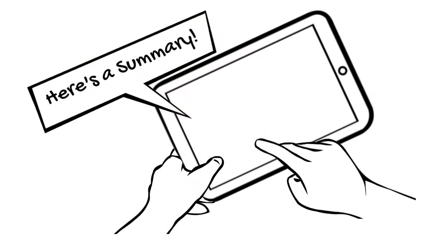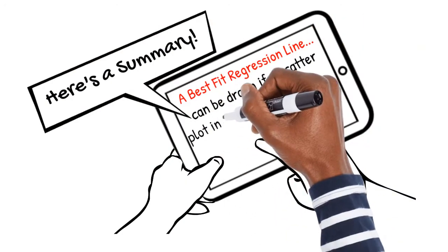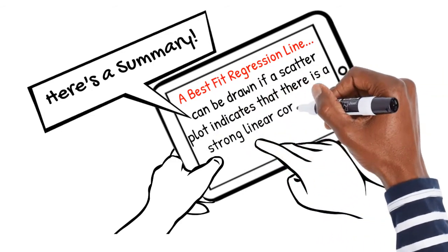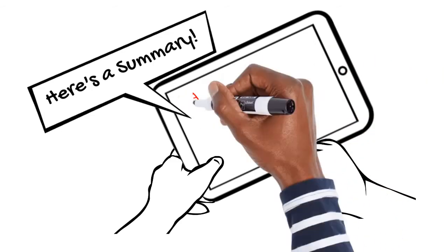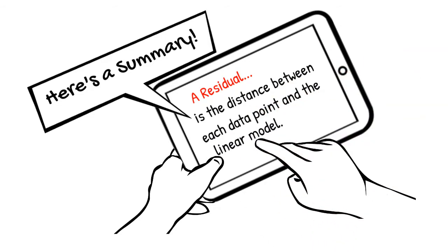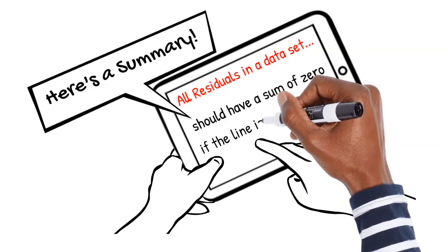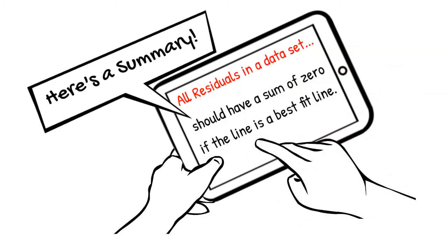Here's what we've learned in this video. A best fit regression line can be drawn if a scatter plot indicates that there is a strong correlation. A residual is the distance between each data point and the linear model. All residuals in a data set should have a sum of 0 if the line is a best fit line.